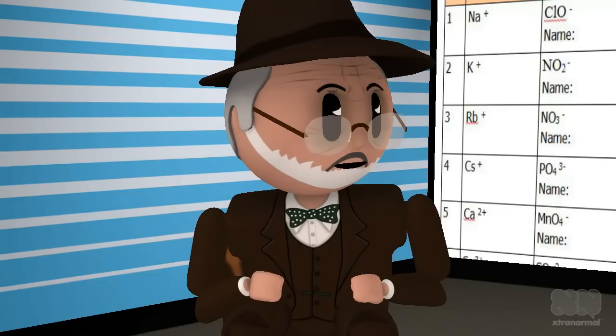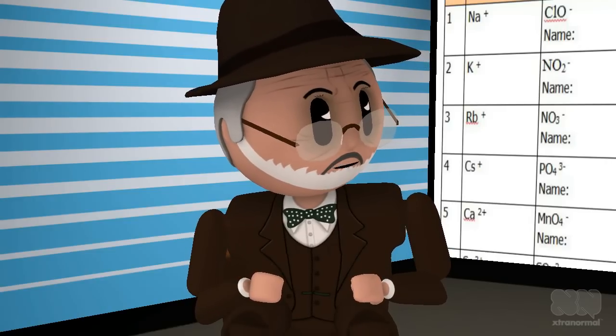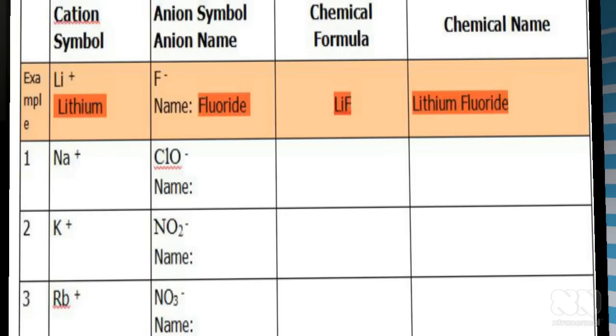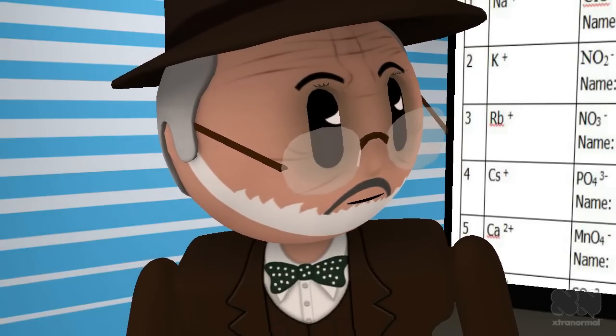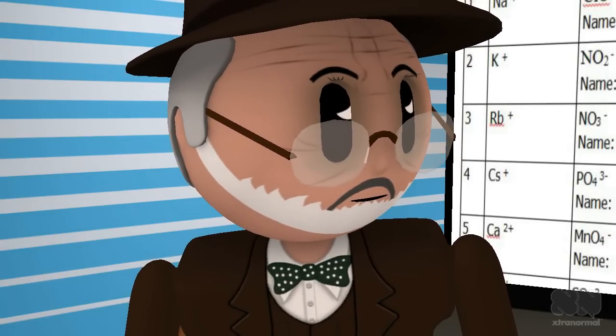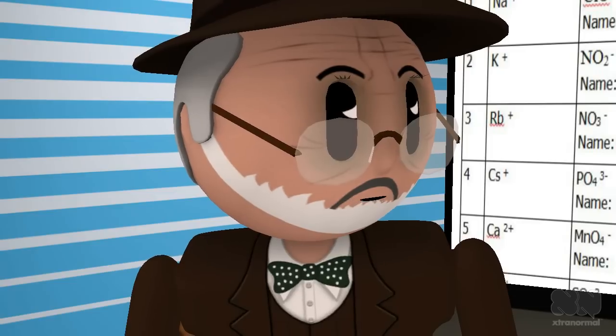The instructor gave you the ions she wants you to combine to make a neutral compound. In the first line, the line that is colored, she lists the example of a positive lithium ion and a negative fluoride ion. Because the compound is supposed to be neutral, you have to combine the ions based on their charges. Does that mean that if one ion has a single positive charge and the other ion has a single negative charge, they combine one to one? Yes, correct.